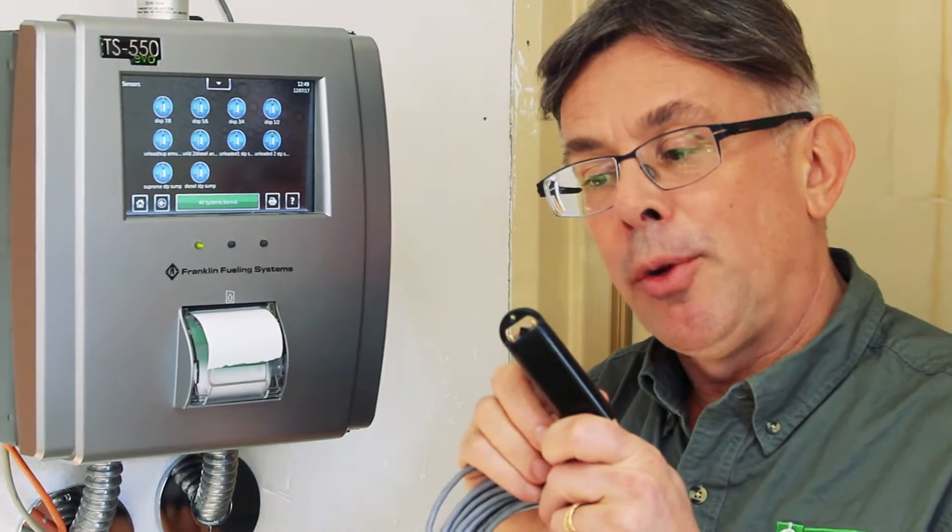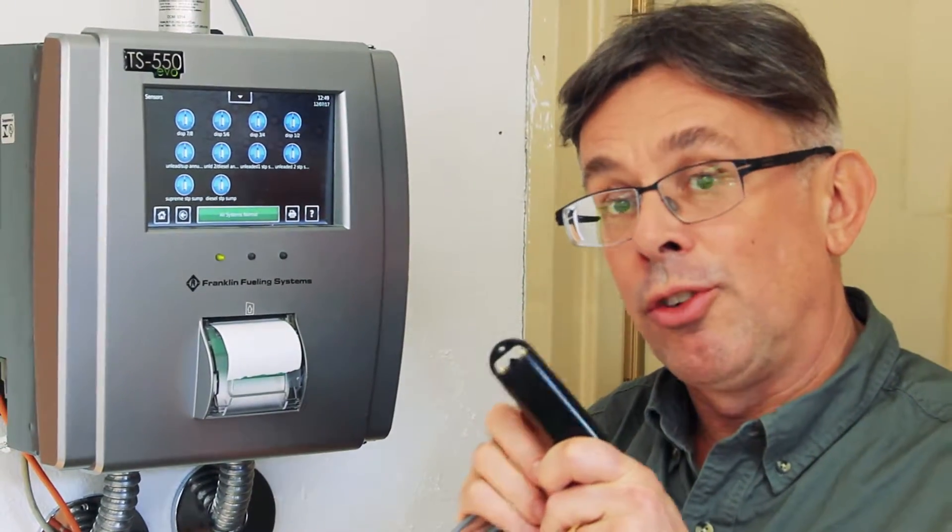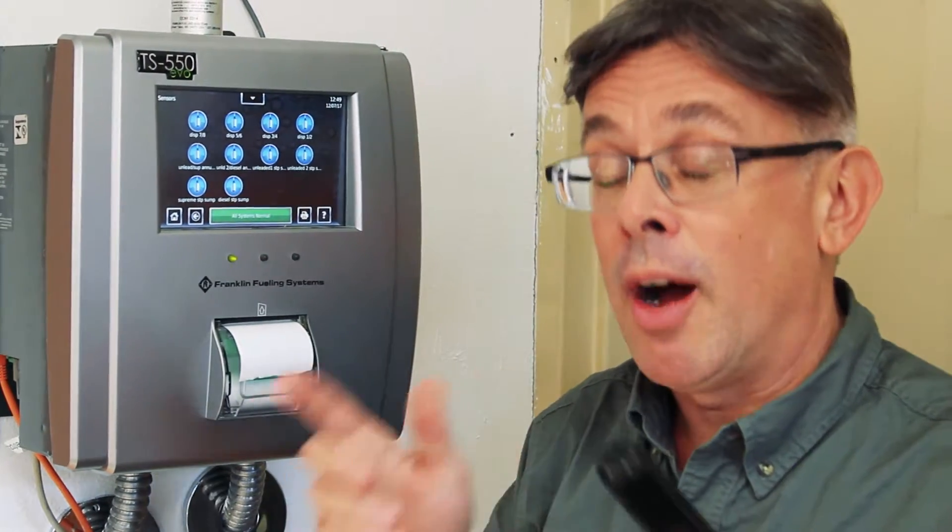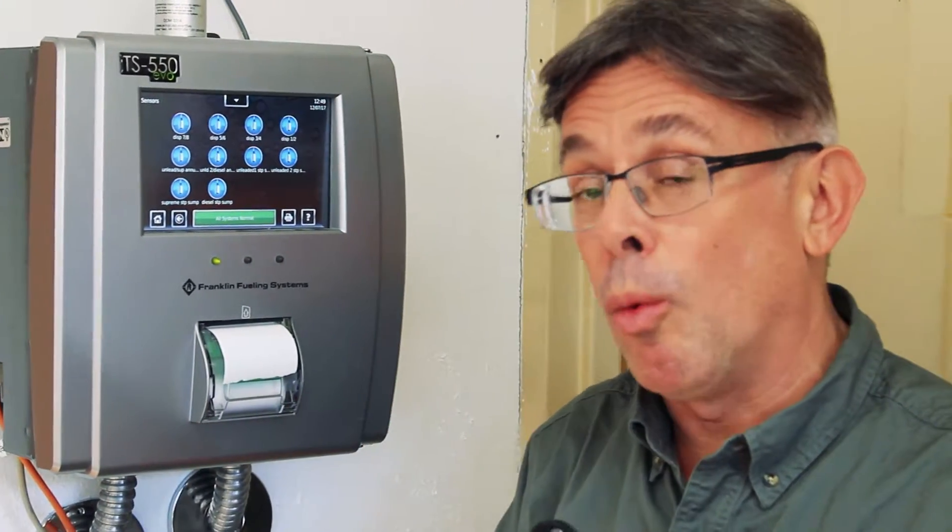These discriminating sensors, these optical sensors that are found in certain interstitial systems, can differentiate between fuel and water. Obviously, fuel is the worst, but even if you get water in your containment system, you'll want to get it out right away.